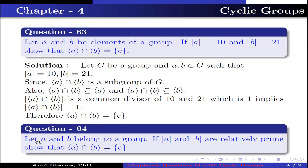Question number 64: Let A and B belong to a group. If the orders of A and B are relatively prime, show that ⟨A⟩ ∩ ⟨B⟩ = {e}. This is the same as question number 63, with the argument applied to the general case of relatively prime orders.